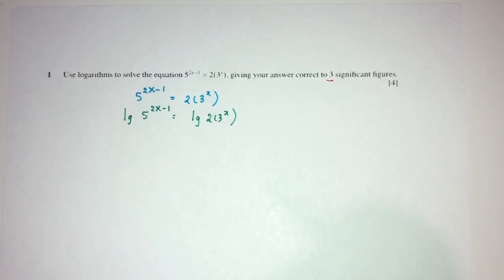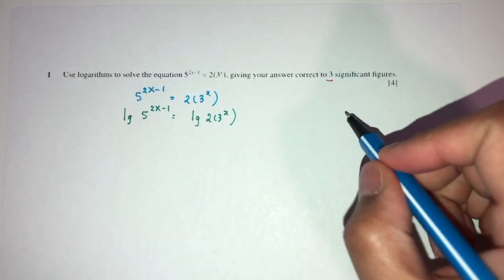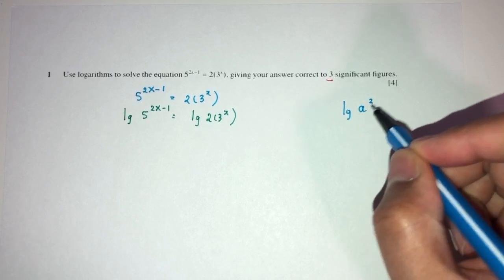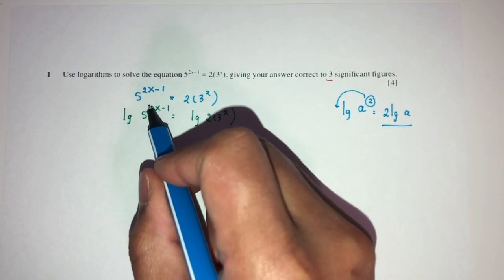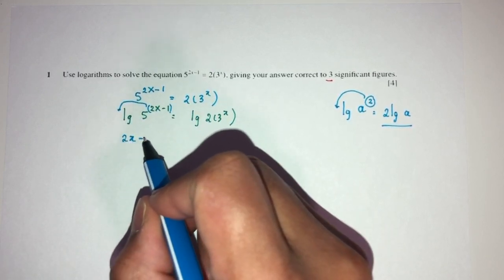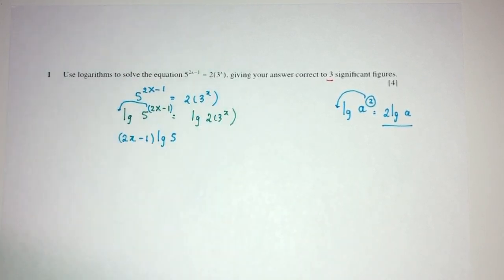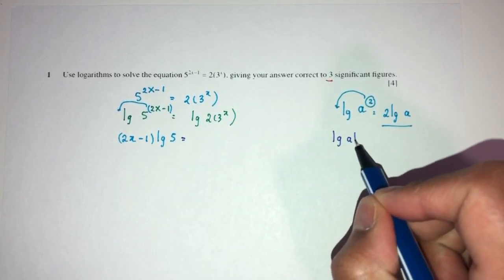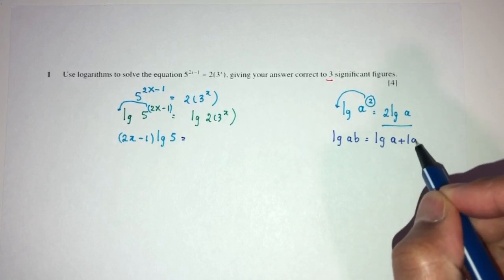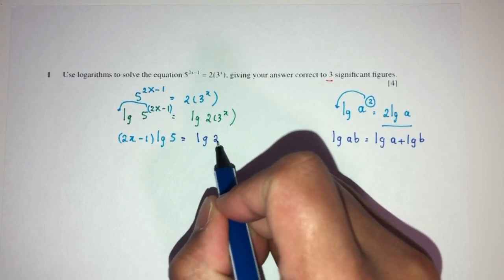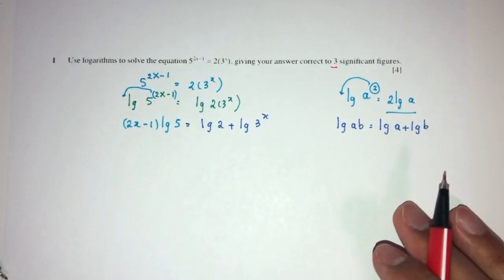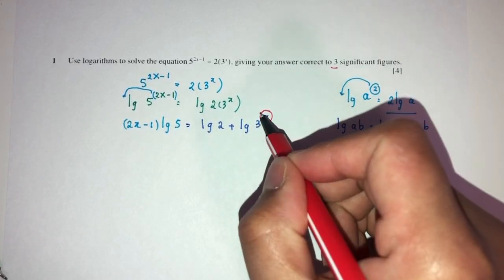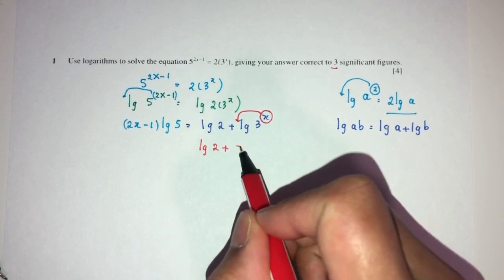Next, we have to simplify using the laws of logarithms. For example, log of a^2 is the same thing as 2 log of a. Similarly, the power here, I can send this to the beginning. You will have (2x-1) log 5. And this is equal to what? We can break it down using the law of logarithms. Log of ab is the same as log a + log b. So, you will have log 2 + log 3^x. Let's bring this down as we have seen here. You will have log 2 + x log 3.